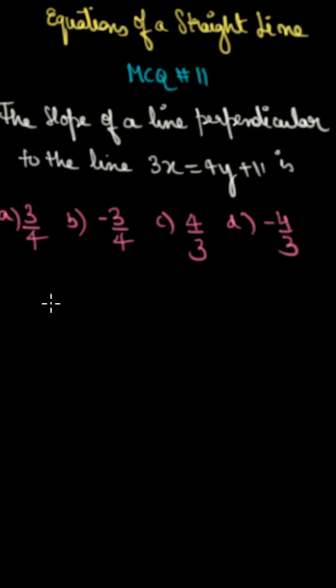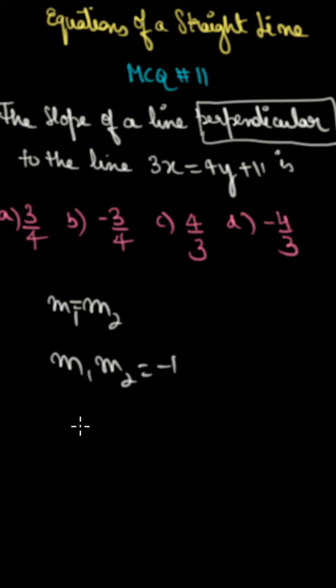If there are two slopes in parallel, m1 and m2 are two slopes, so they are equal. And here the case is perpendicular. So what happens in perpendicular? m1 and m2, the multiplication is minus 1, or you can say that m1 will be minus 1 by m2, like this.